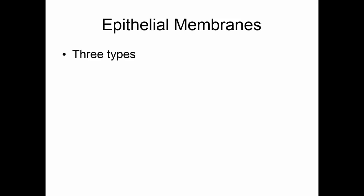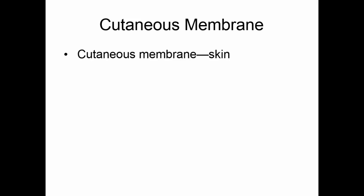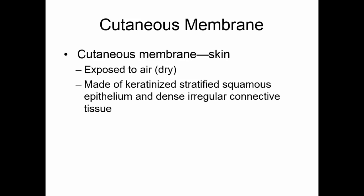There are three types of epithelial membranes: cutaneous, mucus, and serous. The cutaneous membrane is the skin. Because the skin is exposed to air, we say it is a dry membrane. The skin is made of stratified squamous epithelium — that's the epithelial layer — and dense irregular connective tissue — that's the connective tissue layer. The squamous cells become keratinized as part of their development process, meaning they get a heavy protein coat that makes them waterproof.